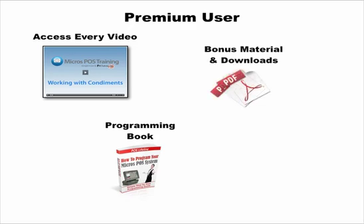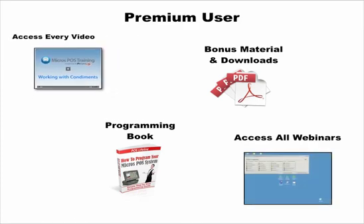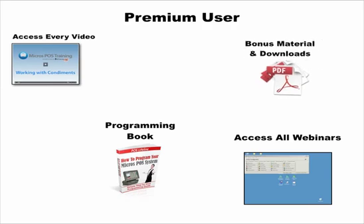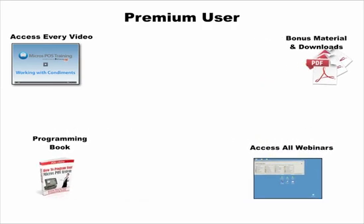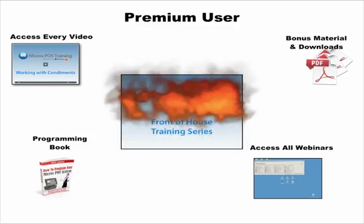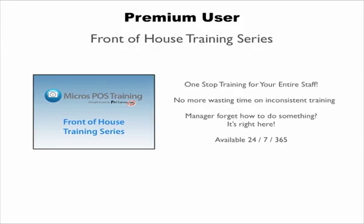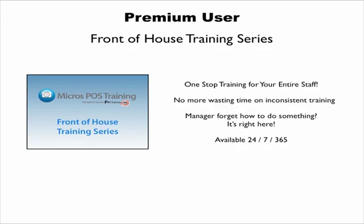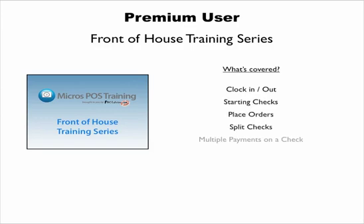In addition, you get access to a free copy of the manual and access to something pretty cool we're working on right now: a front-of-house training series. This series is going to cover all of the basics for your servers, bartenders, and front-of-house management staff. Imagine a standard training program for your entire staff that costs less than $500. We'll be covering everything from how to properly clock in, start checks, place orders, split checks, multiple tenders on a check, combining checks, how to check a server out, adjust their time card, run specials, contests, and so much more.